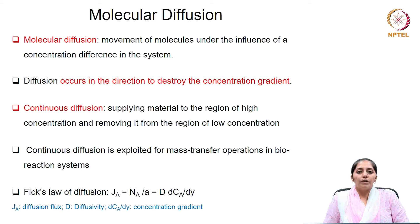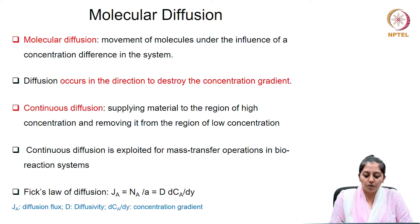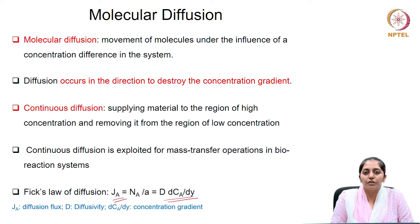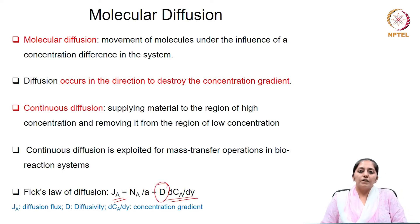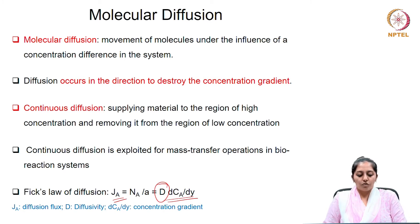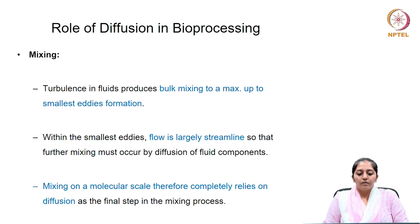This continuous diffusion is exploited for mass transfer operations in bioreaction systems. In order to quantify mass transfer rates, we apply Fick's laws of diffusion. The mass flux J_A is related to the concentration gradient, where the coefficient of relationship is diffusivity D. So J_A stands for the diffusive flux, D is diffusivity, and dC_A/dy is the concentration gradient.